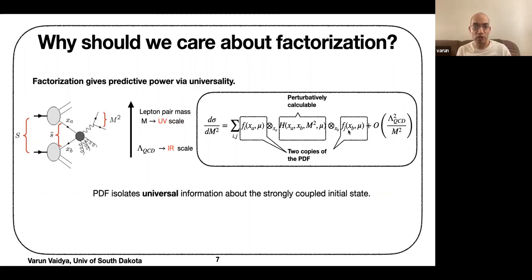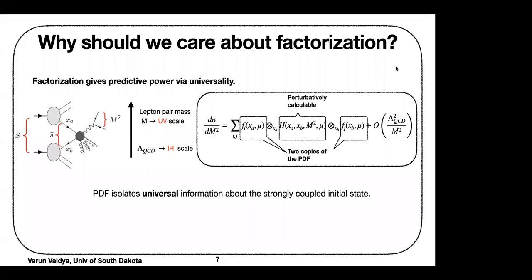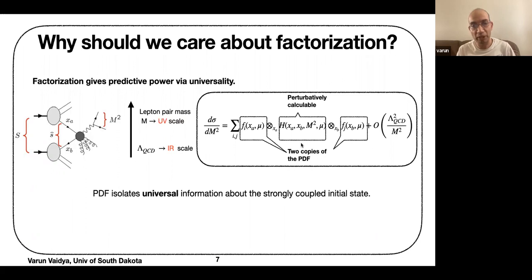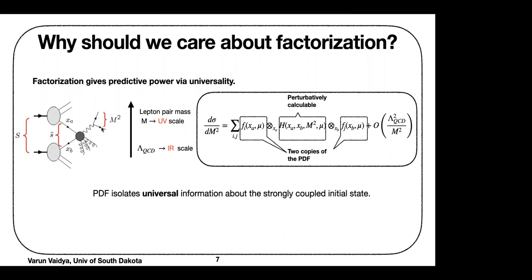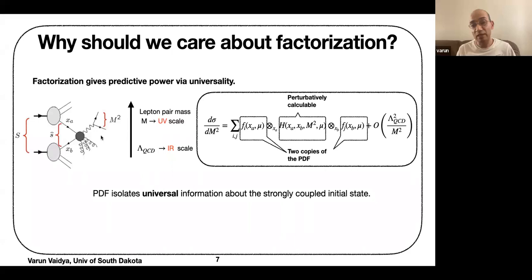A question was raised: in the diagram, a soft gluon exchange between the in-state and out-state can violate the factorization theorem. Specifically, a soft gluon exchanged between the two incoming beams — you cannot always write that as a soft function times a hard function. The response: factorization violation does happen, but only for certain specific observables. When measuring just the invariant mass of the lepton pair in Drell-Yan, this is the correct factorized characterization, and no additional soft function is needed to account for other radiation, up to leading power in the scale ratio.